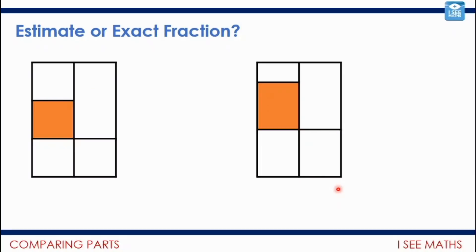Sometimes we can say exactly what fraction we have, and sometimes we can only estimate. Looking at two examples: I know this orange part is exactly a sixth — if I add a line, I'd have six equally sized pieces. But for this other part, I don't have enough information to say exactly. I'd estimate by thinking how many of this part would fit in the whole — about five — so I'd estimate it's about a fifth, but I can't be exact.